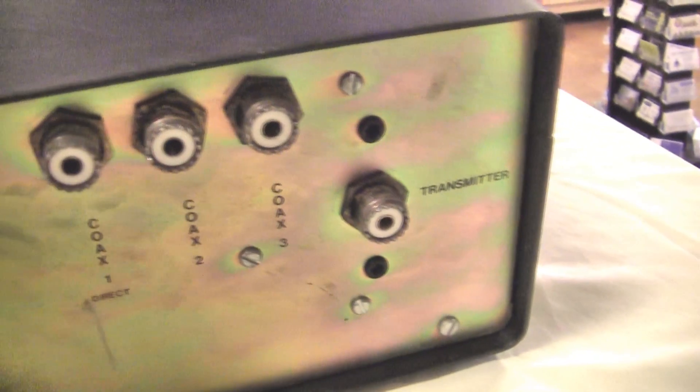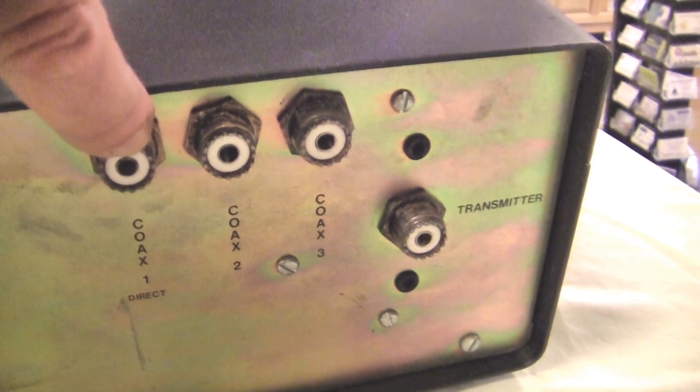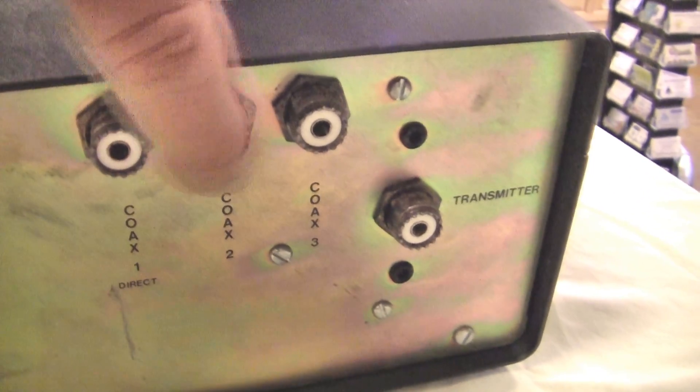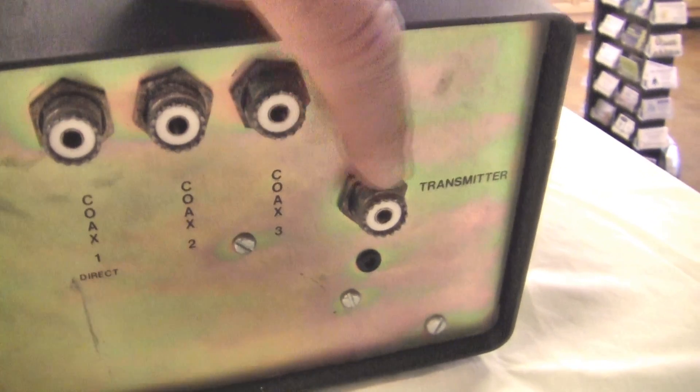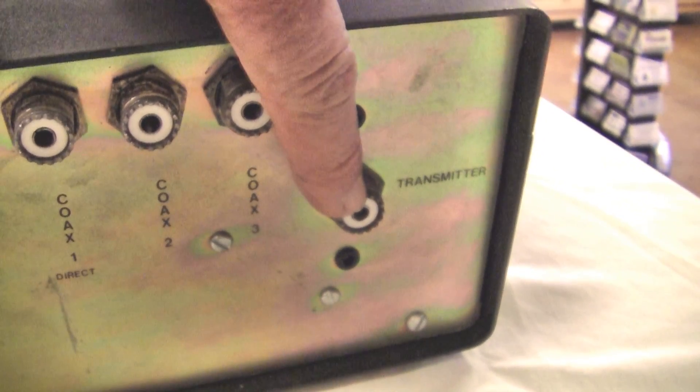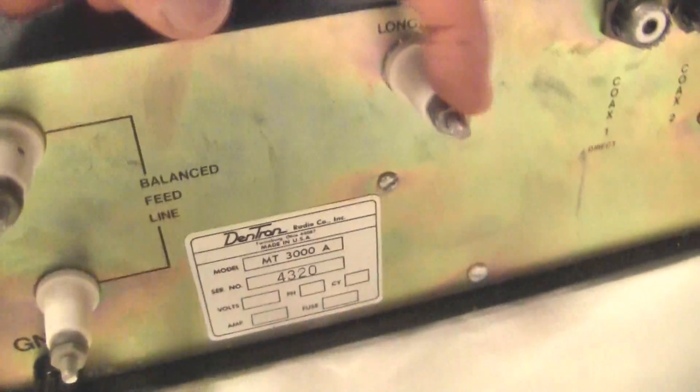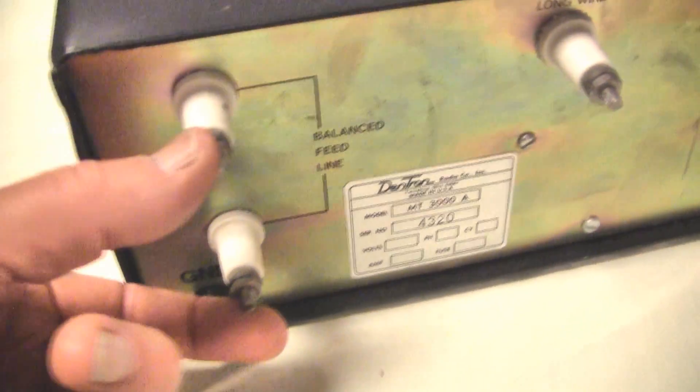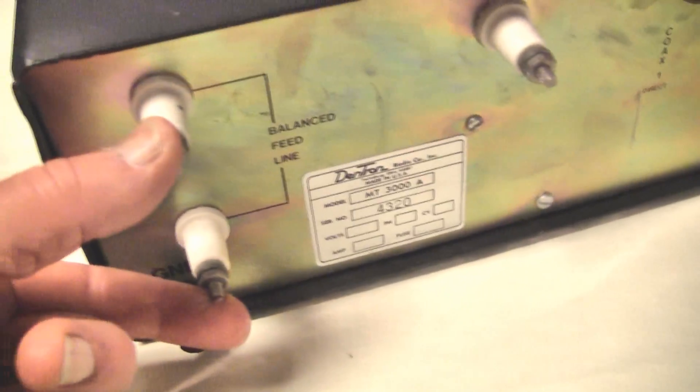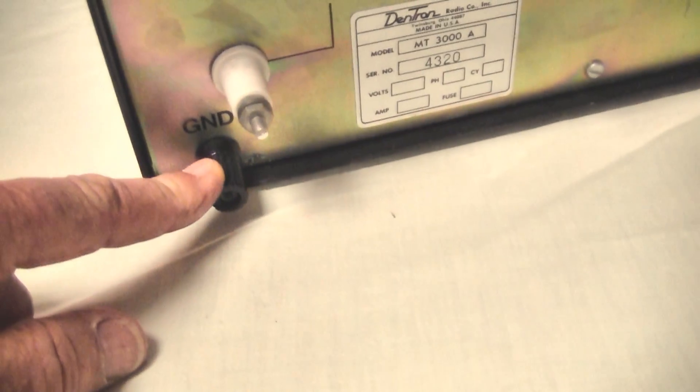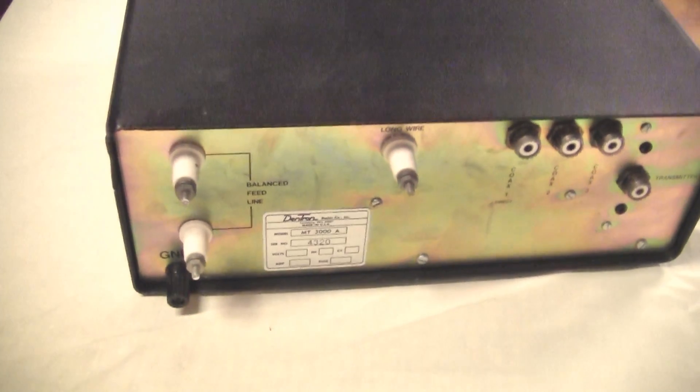Around back, here are the connections for those three coaxes. You can tie three antennas to this through coax 1, 2, and 3. This ties to your transmitter. This would tie to your long wire. Here's the two connections for a balanced line. And here's your ground connection down here. Straightforward, just the connections you need, no other frills.